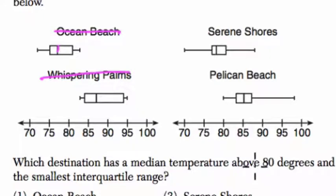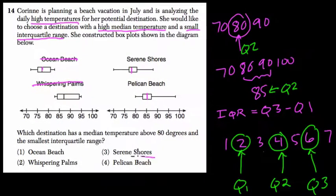But also notice they want the median temperature above 80 degrees. That's Pelican Beach because this is Q2, the median, and that's above 80, whereas Serene Shores, the median is below 80. So we want to pick Pelican Beach.